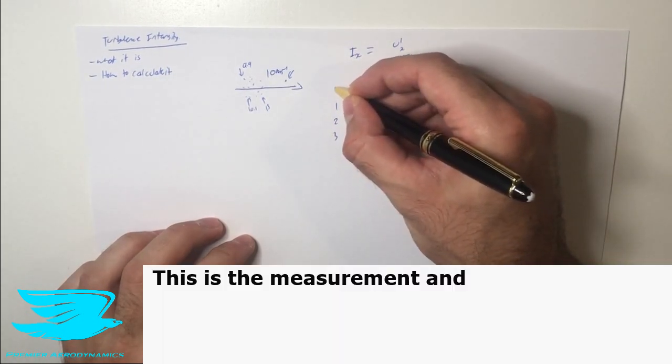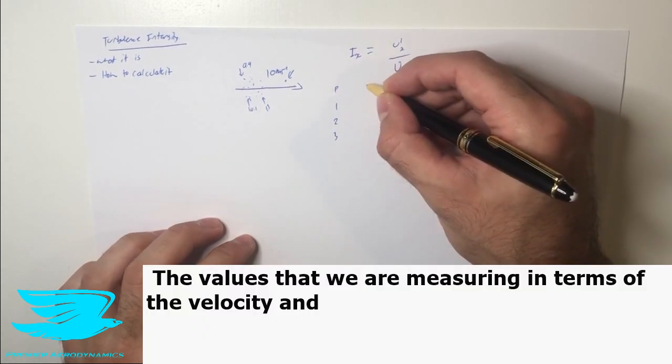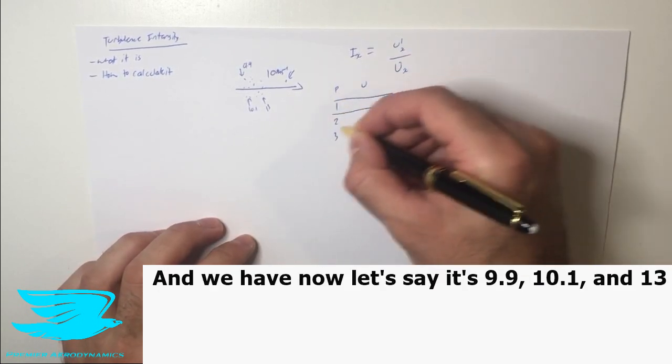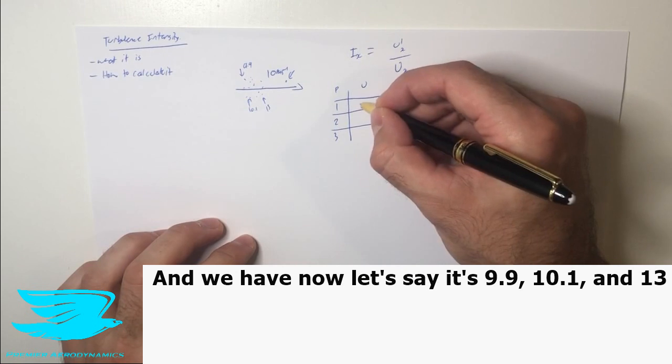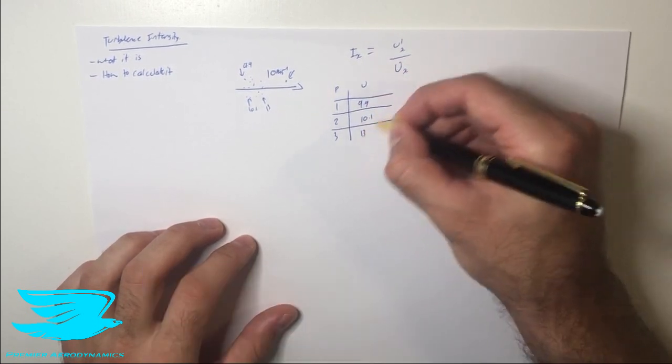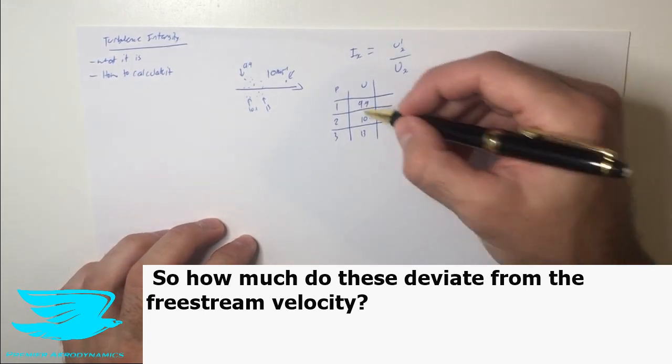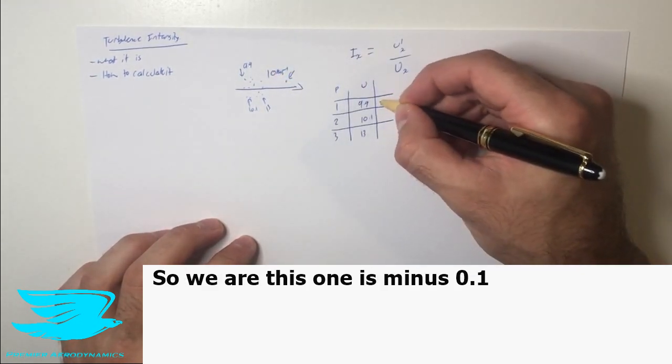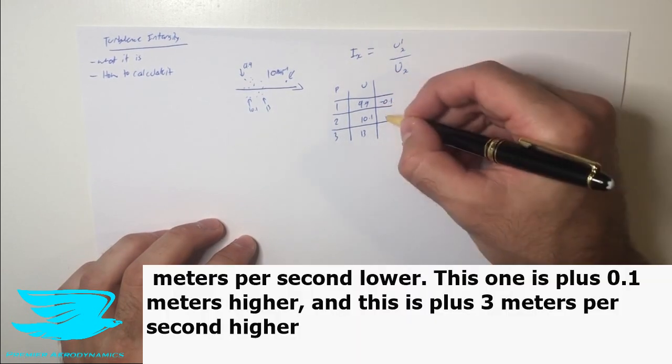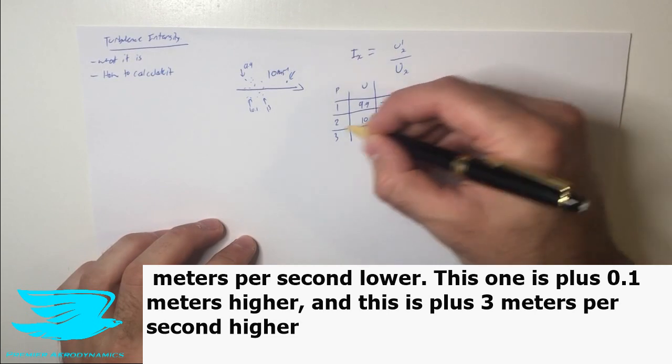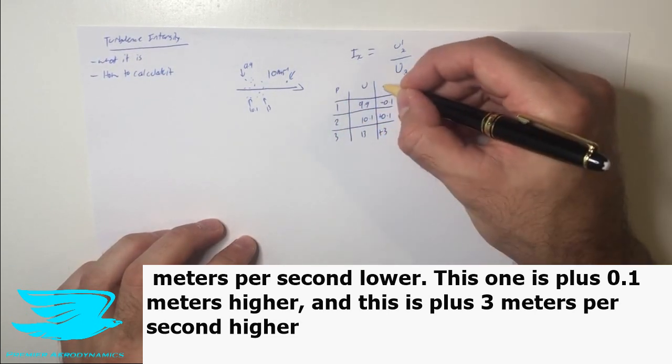And this is the measurement and the value that we are measuring in terms of the velocity. And we have now, let's say it's 9.9, 10.1, and 13. So how much do these deviate from the freestream velocity? So we all know that this one is minus 0.1 meters per second lower. This one is plus 0.1 meters higher. And this is plus three meters per second higher.